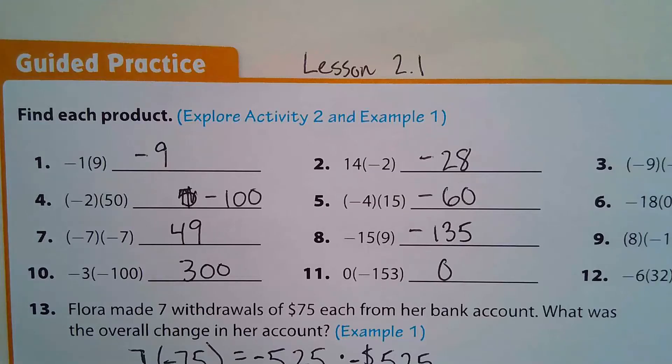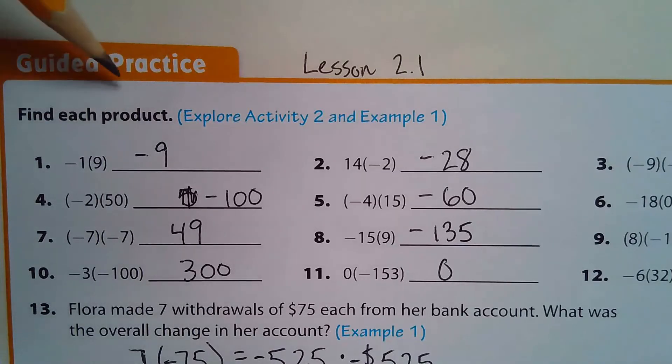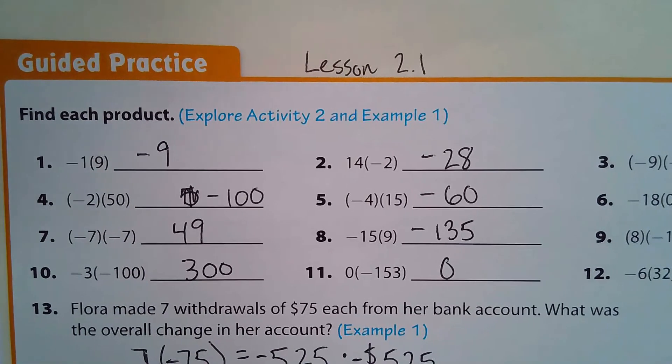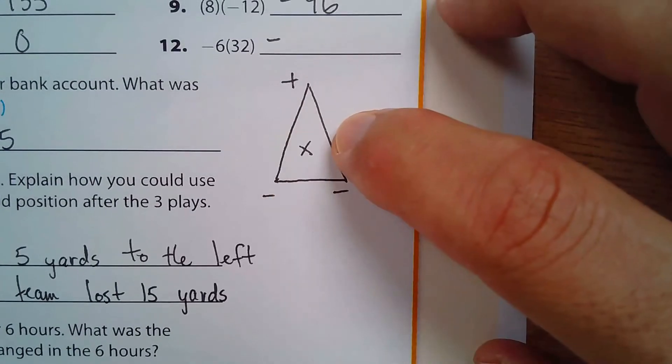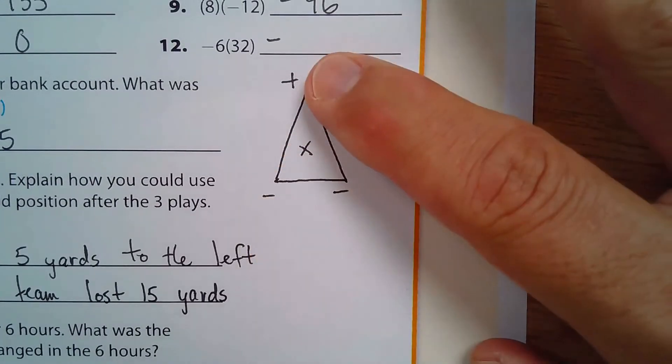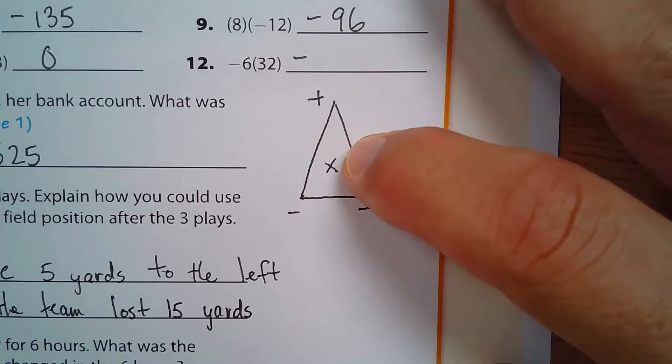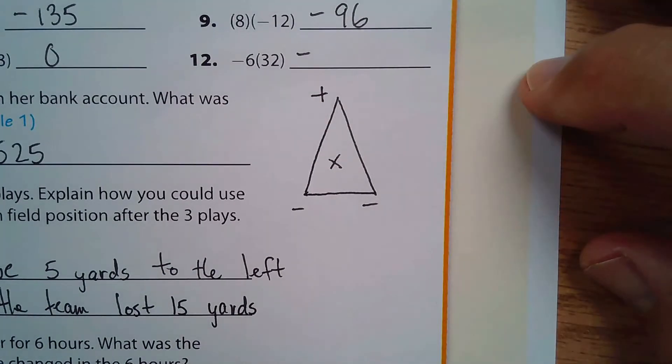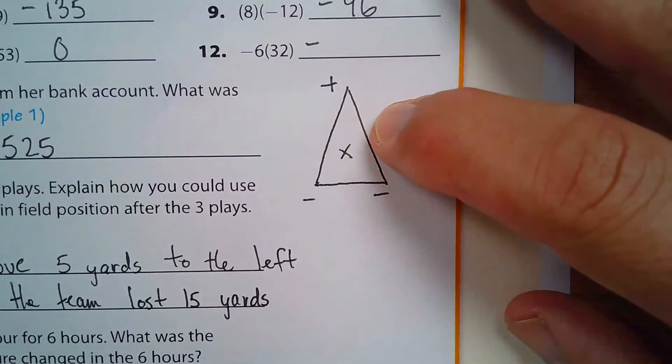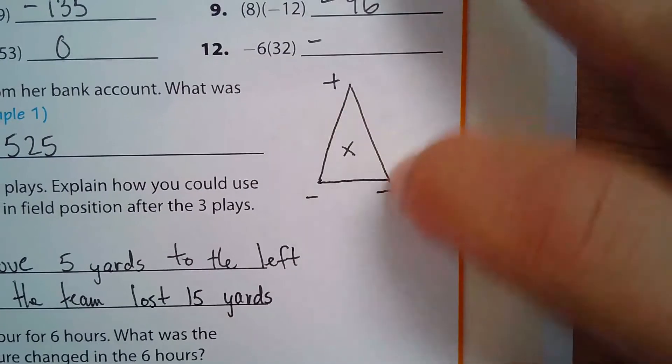All right, so we have the guided practice for lesson 2.1, and it's all about multiplying integers. The basic thing is, I have this little thing here: negative times a negative is a positive. And if you need to learn why this is all happening, I have the lesson right before this as to why this all works. But for now, I'm just going to use this as a reminder.